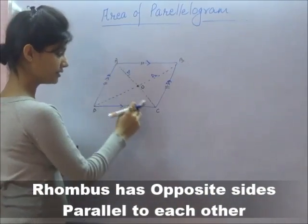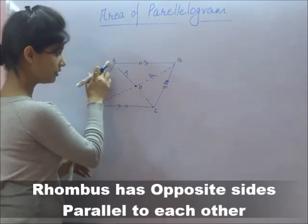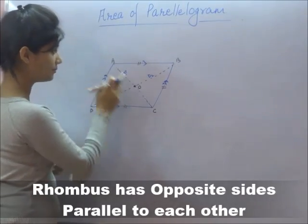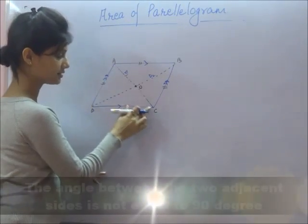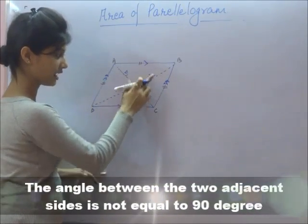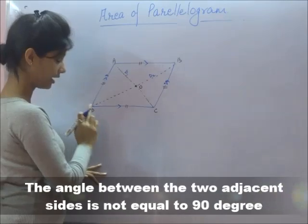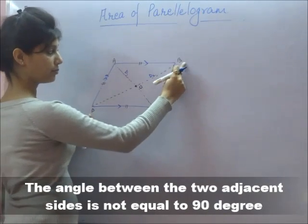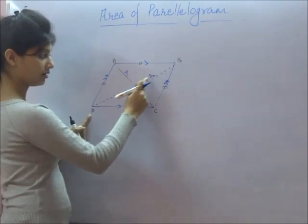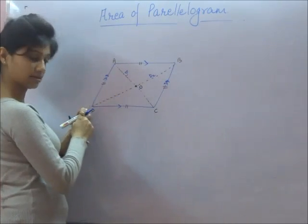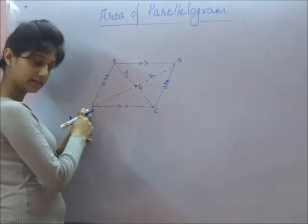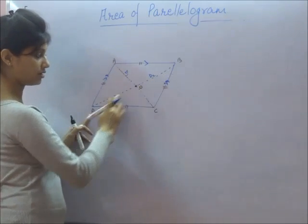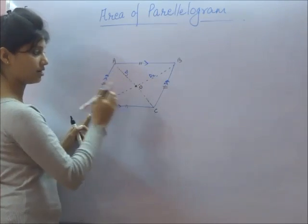Now, when we draw a line between A and C, this acts as D1, the diagonal. When we make a line from B to D, this is another diagonal which we can call D2. So there are two diagonals.